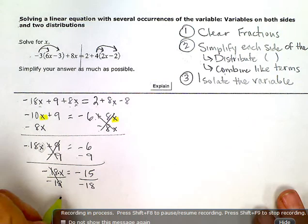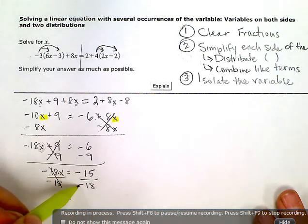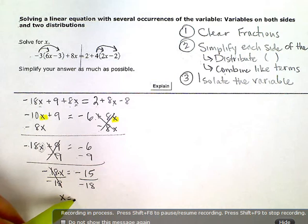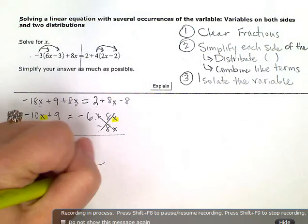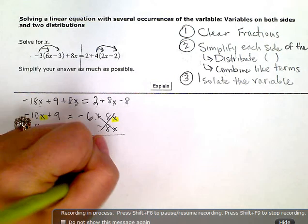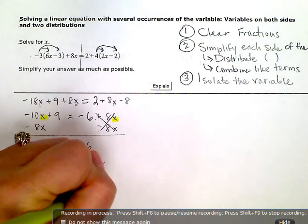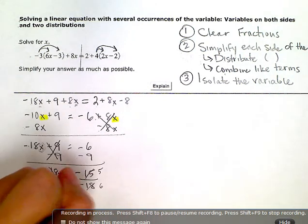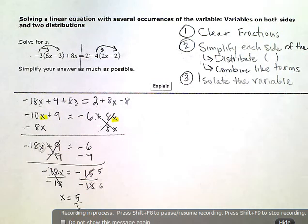I'm left with x equals a negative divided by a negative, which simplifies to a positive. Then I just need to reduce it. Three goes into both of these, into 15 five times, into 18 six times. So my final answer is x equals five sixths.